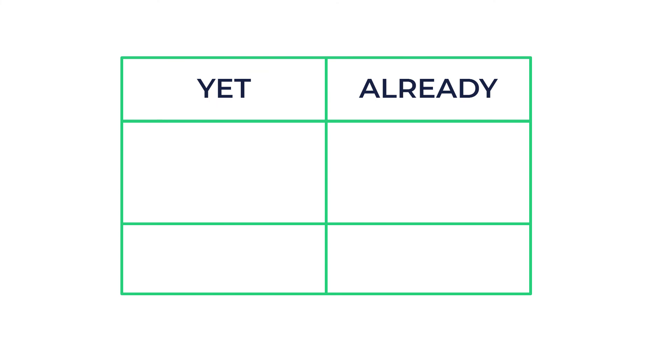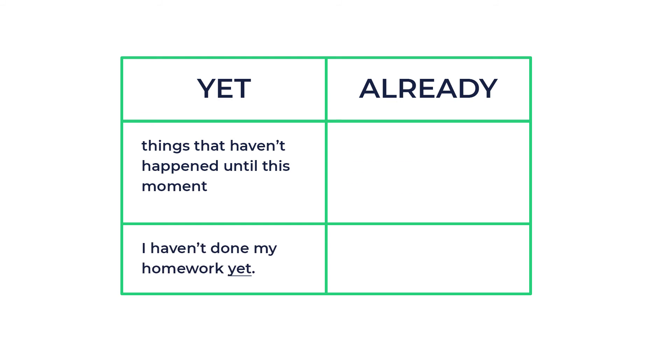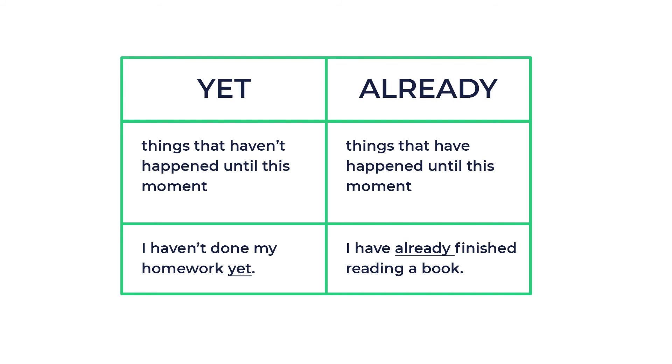Now that we've already talked about invitations, it's time to organize other things for the party. Do I have decorations? No, not yet! But I have already made snacks! Now you have a chance to remember the rules about such wonderful words as YET and ALREADY! The rule is super easy! YET is for things that haven't happened until this moment. I haven't done my homework yet! ALREADY is for things that have happened. I have already finished reading a book! We use both of them with present perfect. Be careful! YET we put at the end of the sentence, and ALREADY we put after HAVE/HAS and before the main verb.